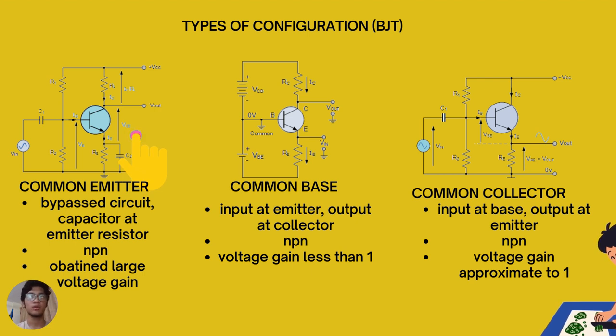Next, we are going to look at the common collector. In common collector configuration, load resistance is connected in series with the emitter terminal so its current is equal to that of the emitter current. The voltage gain is approximately 1.